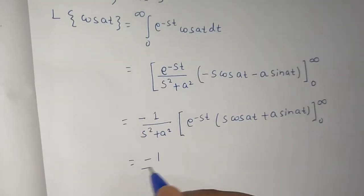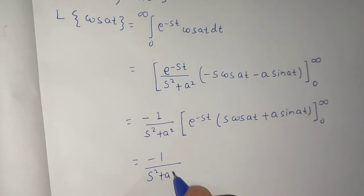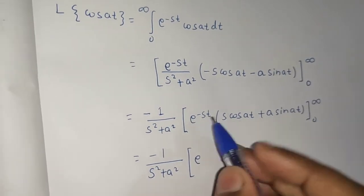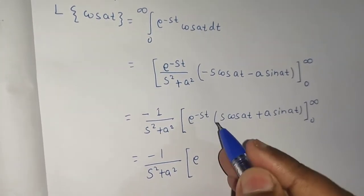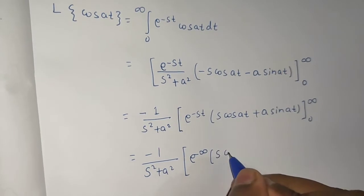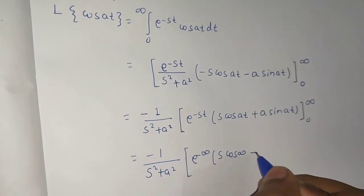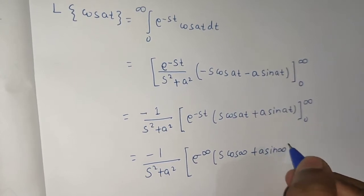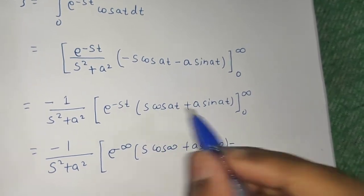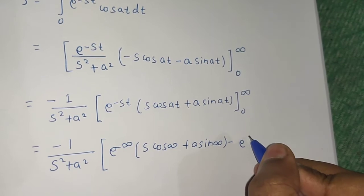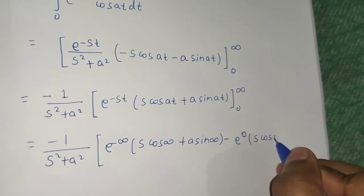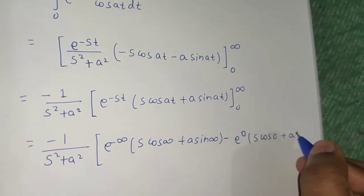Now we put in the limits. Putting in infinity: e^(−∞) · (s·cos(∞) + a·sin(∞)). Then putting t = 0: e^(−0) times (s·cos(0) + a·sin(0)).